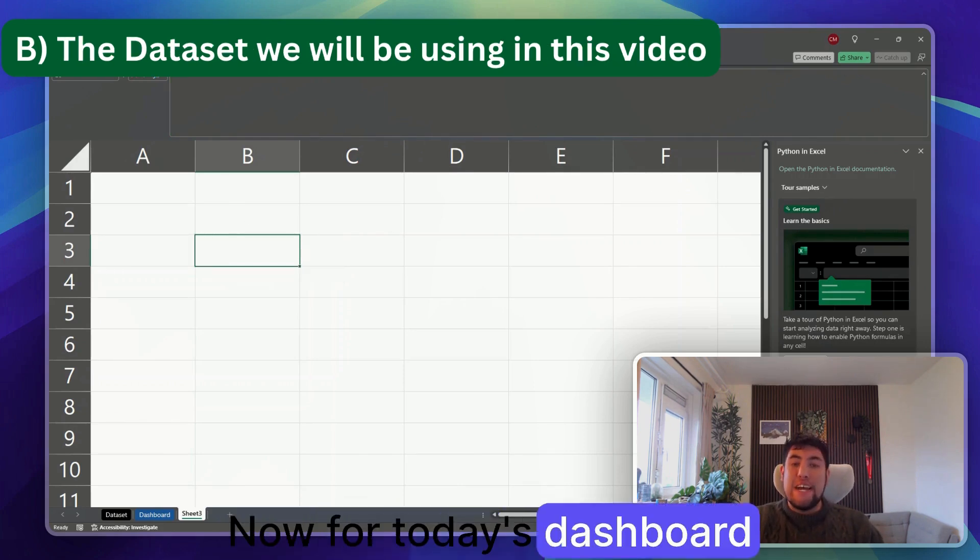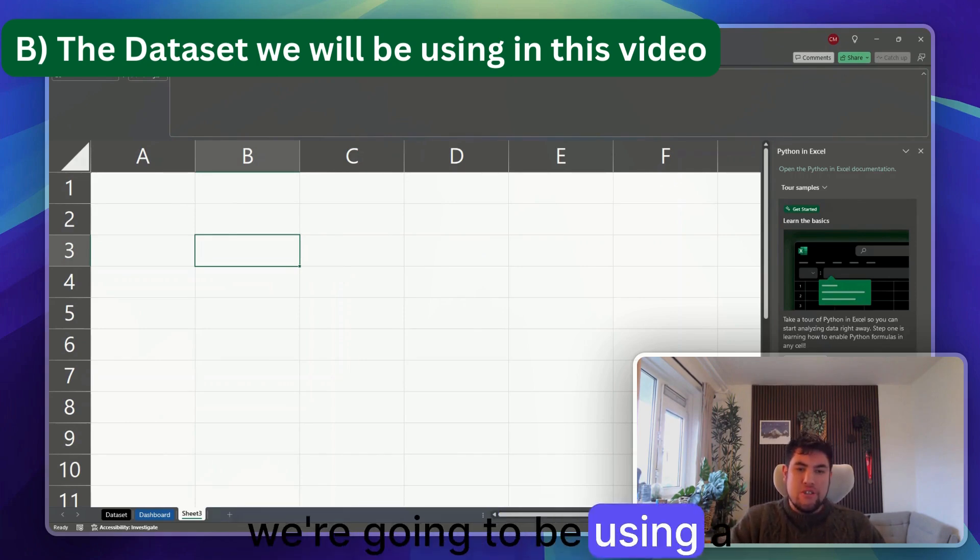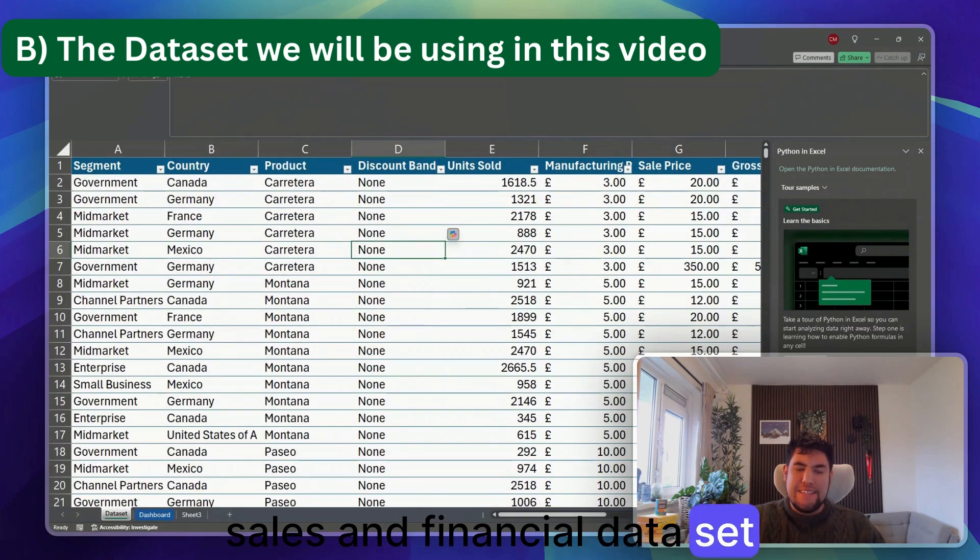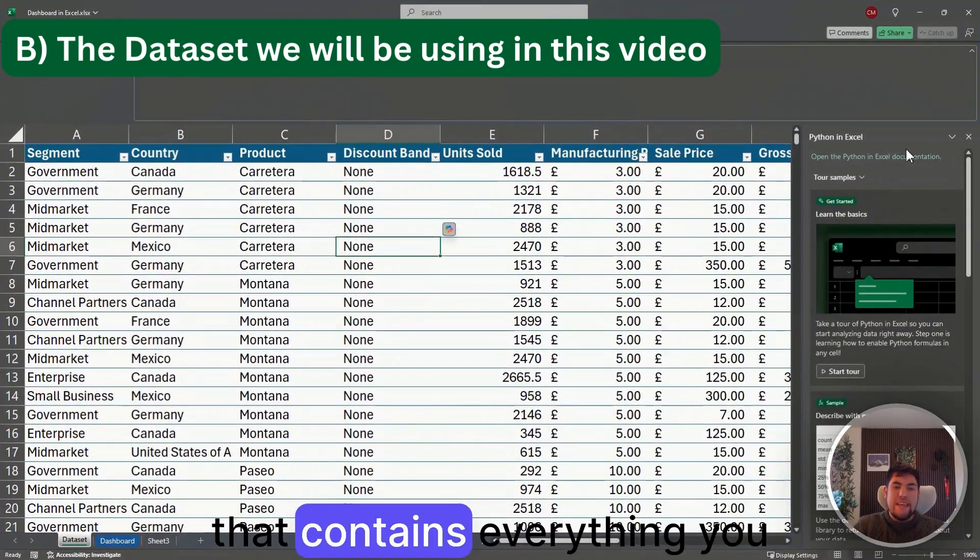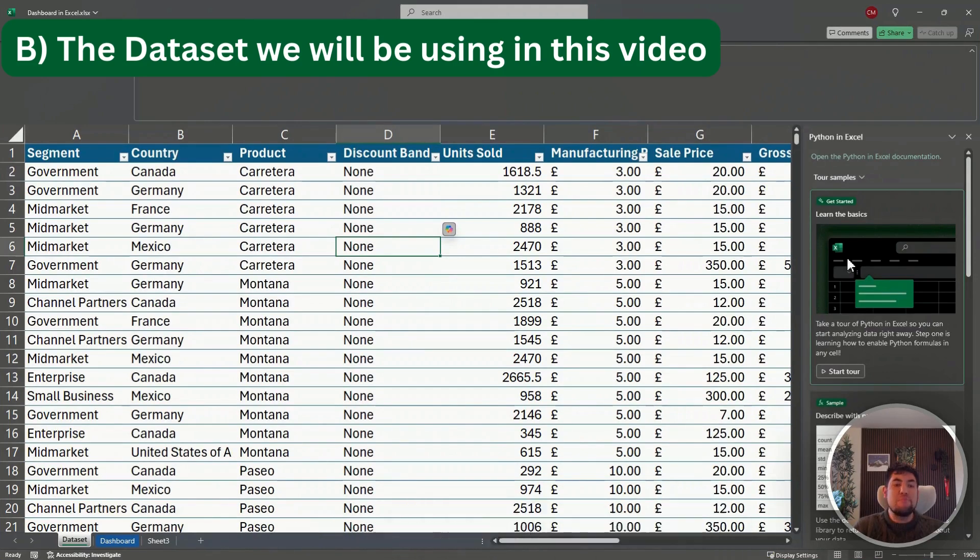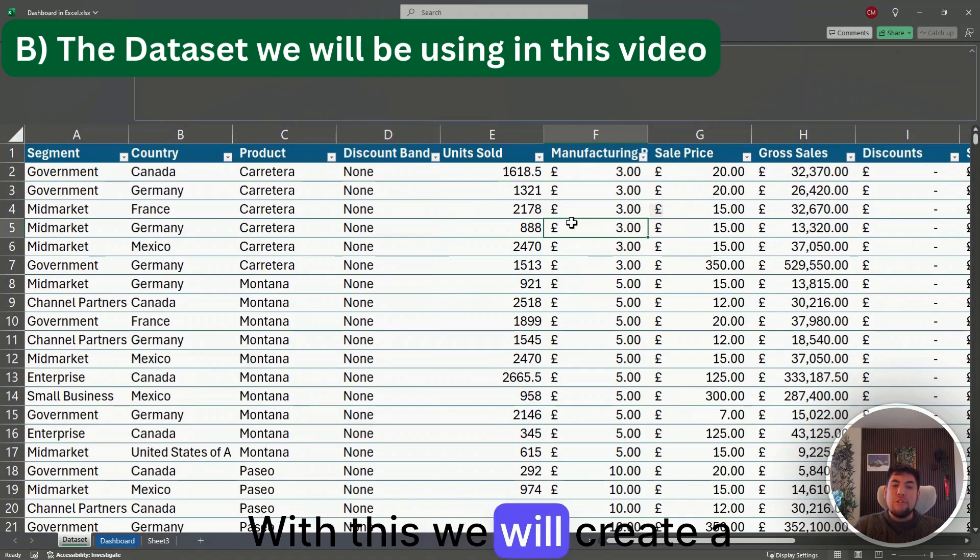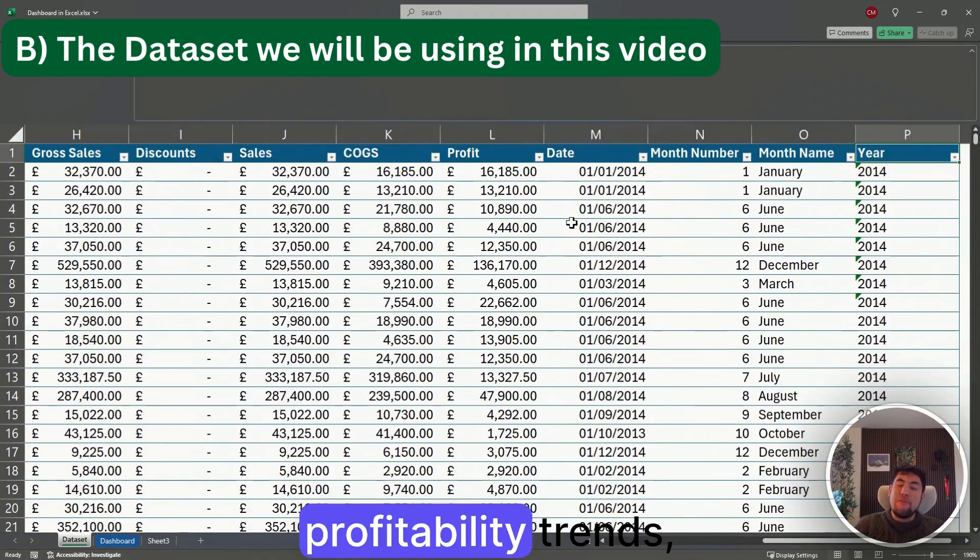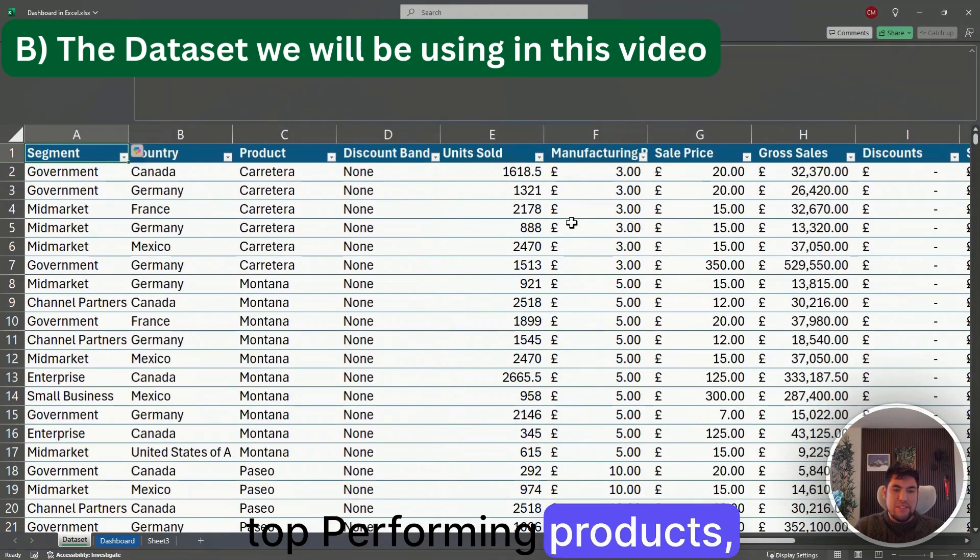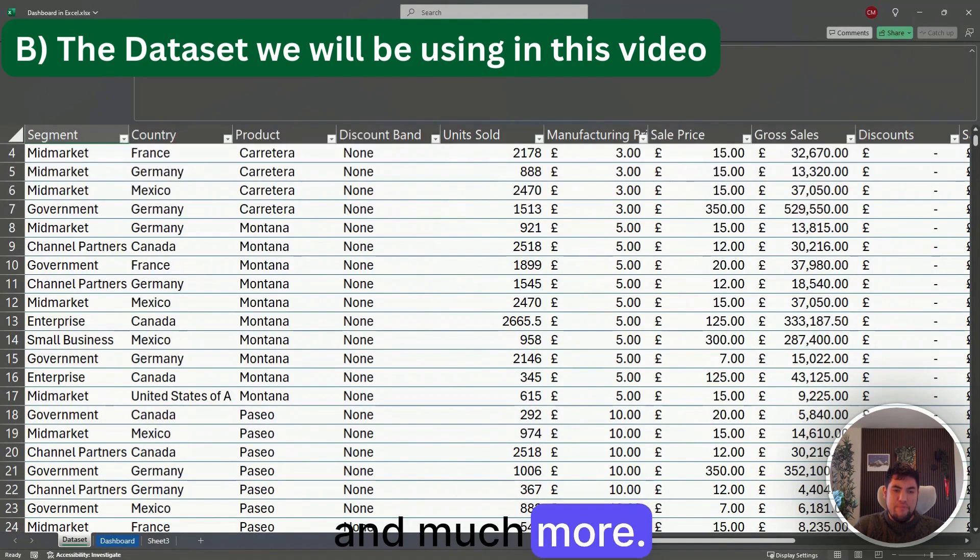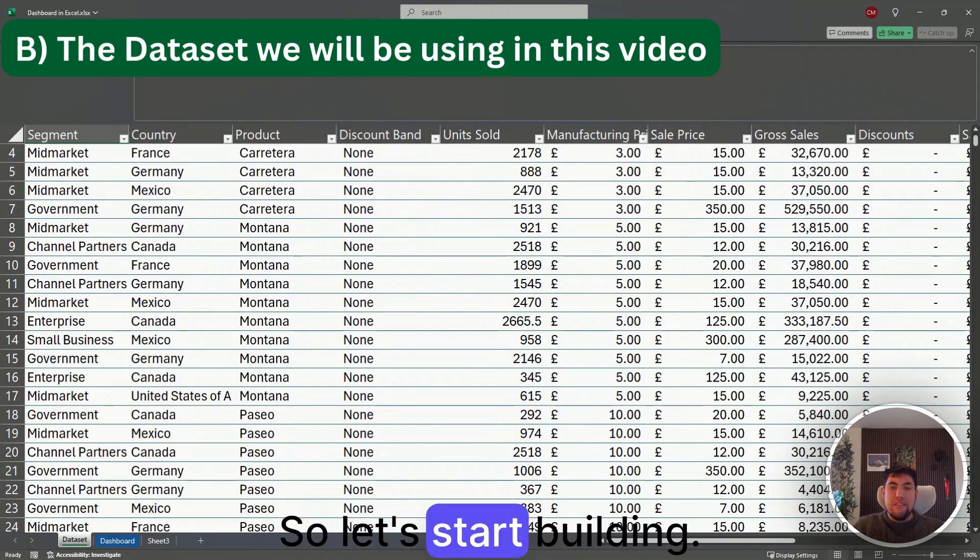For today's dashboard, we're going to be using a sales and financial data set that contains everything you need to analyze business performance. It has columns like segment, country, product, units sold, sales price, gross sales, discounts, and more. With this we will create a dashboard that visualizes profitability trends, top performing products, and much more.